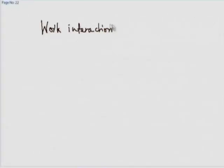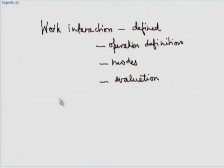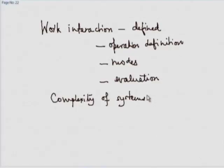That brings us to the end of the basic idea of work interaction. We defined work, provided the operational definition, looked at various modes of work, looked at evaluation of work, and finally looked at the complexity of systems depending on the number of two-way work modes. We will come back to this — it is useful at the end of the first law and particularly useful when we come to the second law. Thank you.